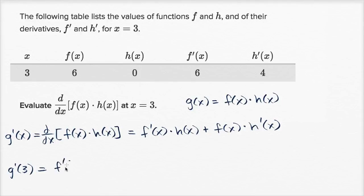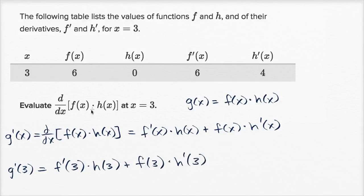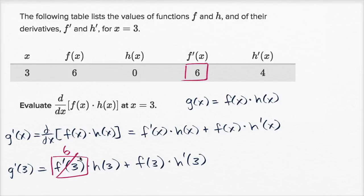So to find g prime of three, that's just going to be f prime of three times h of three, plus f of three times h prime of three. They give us all of these values. f prime of three, right over here, is equal to six. And h of three — when x is three, the value of the function is zero. So the first term is six times zero, which is going to be zero.